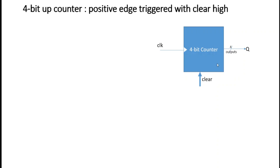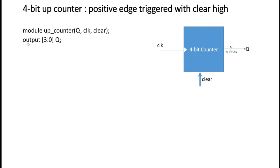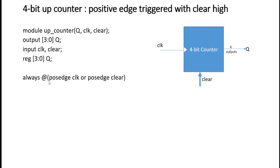We'll start with designing a four-bit up counter which is positive-edge triggered with clear high. This is the block diagram: it has clock and clear as inputs and four-bit output Q. We declare Q as the output using a four-bit vector, and clock and clear as input ports. Since we are designing a sequential circuit using behavioral modeling, Q must be declared as a register type.